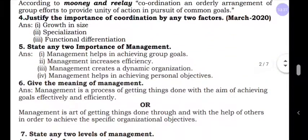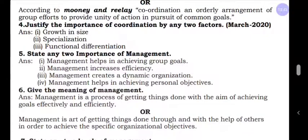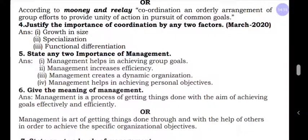The fourth question: Justify the importance of coordination by any two factors. This question was asked in the March 2020 final examination. You can write any two of these three points: growth in size, specialization, functional differentiation. Question number five: State any two importance of management. Four points are given — write any two: management helps in achievement of group goals, management increases efficiency, management creates a dynamic organization, management helps in achieving personal objectives.